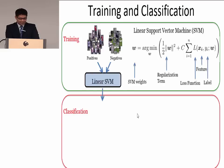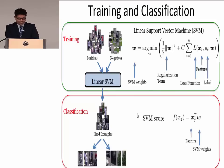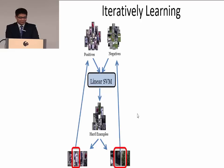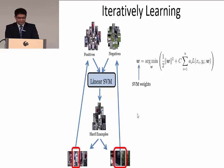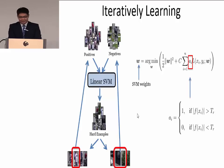After we get the SVM, we can use it to classify the hard examples and get persons and non-persons. The SVM score is computed using this equation. However, it is very difficult to get good results by just training once. So we propose an interactive learning strategy where we select the confident examples from the classification results, put them back into the training data, and train a second classifier. Here we use A_i, a binary variable that controls which example is used for training. If the SVM score is confident, we will use example A_i in the training dataset.